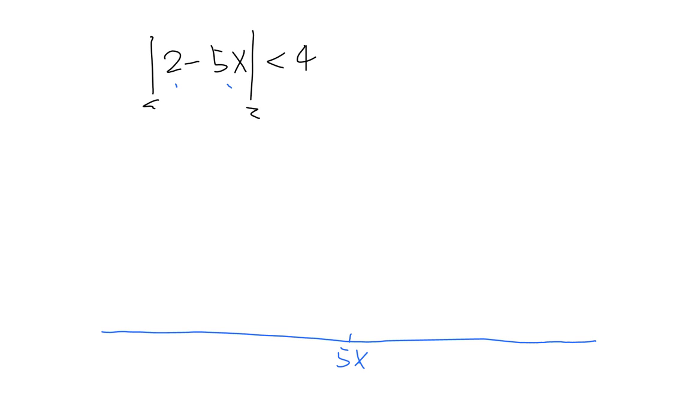Okay, and the distance is smaller than 4. That means the maximum is 5x plus 4, and here is 5x minus 4.